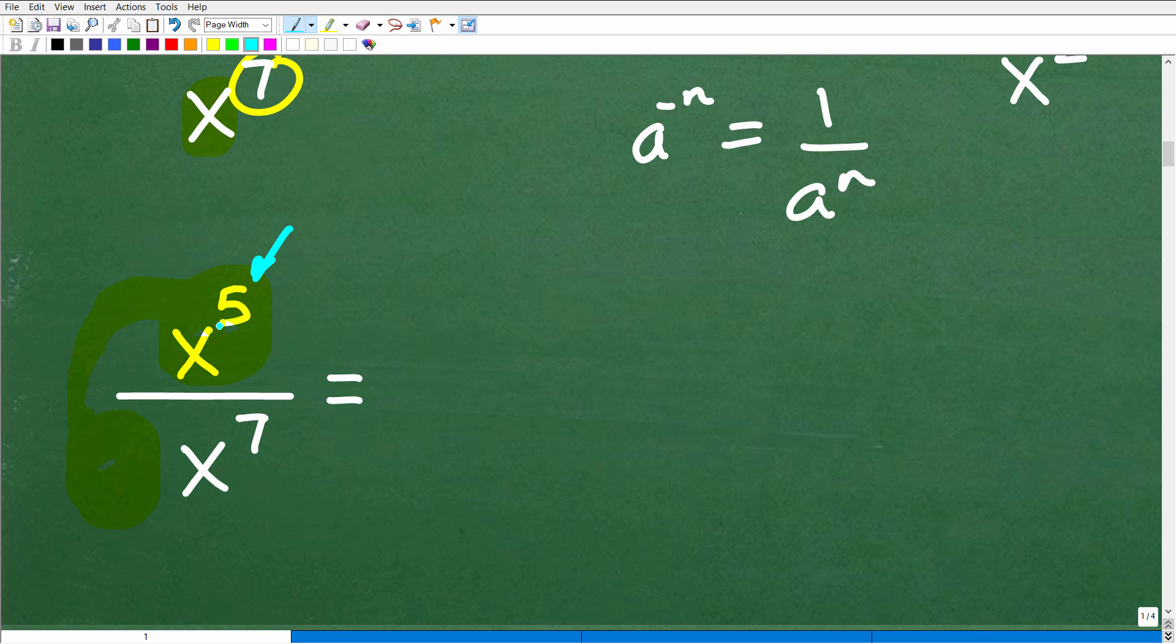So if I want to write my x to the fifth, rewrite this problem where x to the fifth is down in the denominator, the rule is the following: whatever the sign of that exponent is, it needs to become the opposite. So for example, we're going to put this x to the fifth down next to this x to the seventh. And when I do that, instead of being x to a positive five, it's going to become x to a negative five. So it's going to be x to a negative five times x to the seventh. Now when I move this down into the denominator, there's not like zero left, there's always a one in its place. So now we have one over x to the negative fifth times x to the seventh.